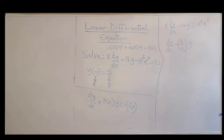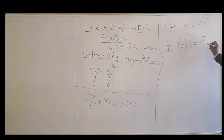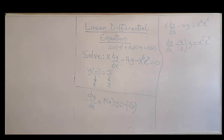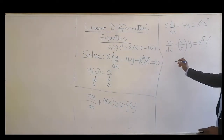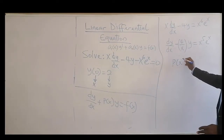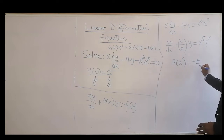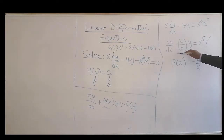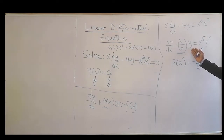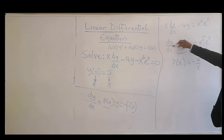Dividing through by x gives us dy/dx minus (4/x)y = x⁵. So P(x), the coefficient attached to y, is negative 4 over x. This confirms the equation is linear in y.